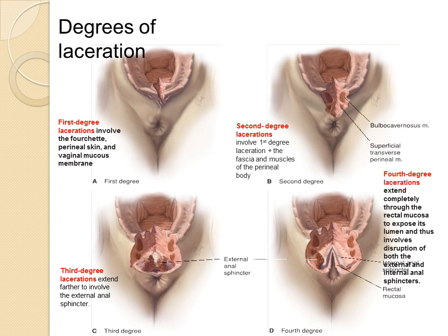The muscles of the perineal body include the bulbocavernosus muscles and the superficial transverse perineal muscles. 3rd degree lacerations involve anything in the 2nd degree laceration plus the external anal sphincter. 4th degree laceration involves everything in the 3rd degree laceration plus the internal anal sphincter and the rectal mucosa.